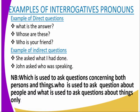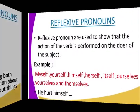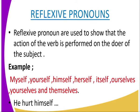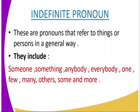We look at reflexive pronouns. Reflexive pronouns are used to show that the action of the verb is performed on the doer of the subject — meaning the action is reflected back on the subject. Examples include: myself, yourself, himself, herself. For example: 'he hurt himself' — here 'himself' shows the action is being performed on the doer, which is 'he.'